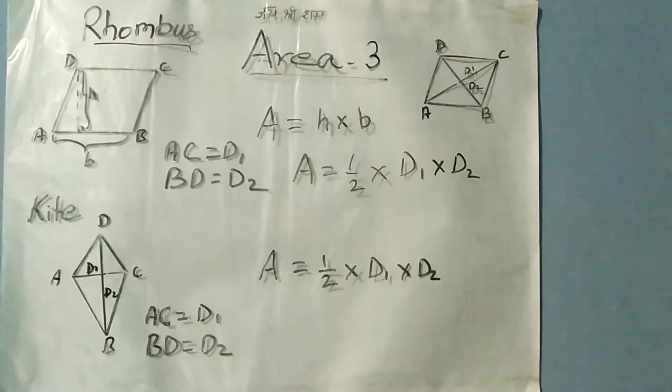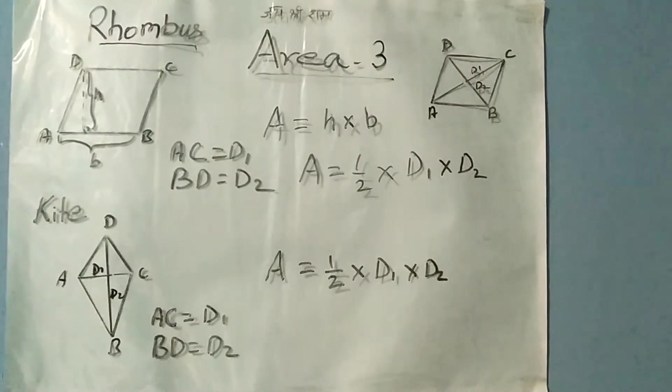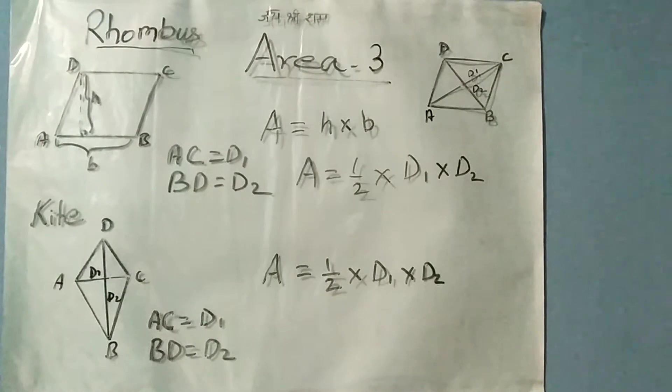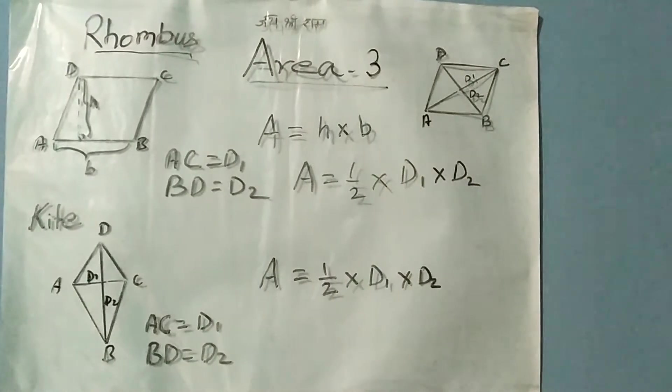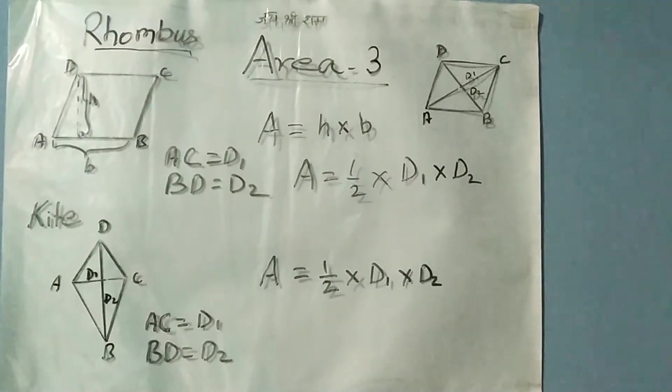Till now, we have discussed geometrical shapes and how to find the perimeter and area of some figures. Today, we will discuss how to find the area of rhombus and kite.